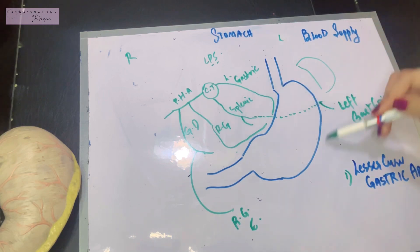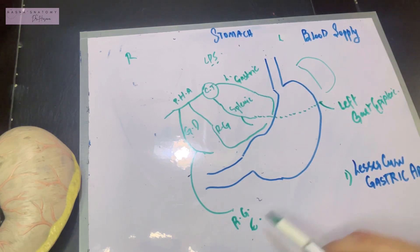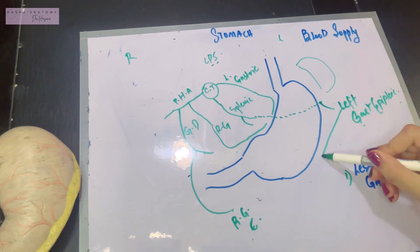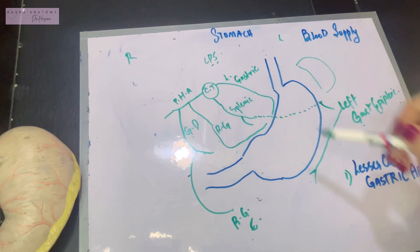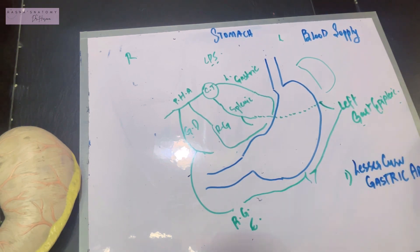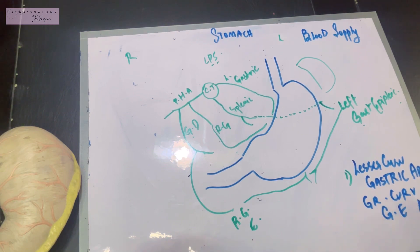Next, let's talk about the greater curvature. What supplies the greater curvature? We had the two gastroepiploic arteries — these are what will supply the greater curvature. From the left side, the left gastroepiploic comes from the splenic artery, and then we have the right gastroepiploic artery also supplying and helping along the greater curvature.